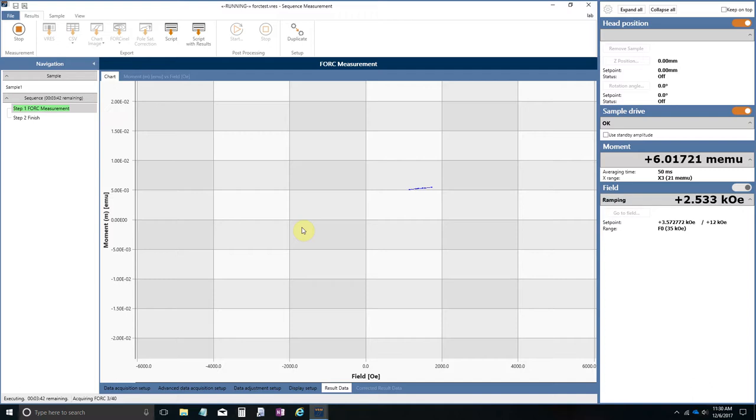So a typical series of first-order reversal curves can contain thousands if not tens of thousands of data points. And therefore, the measurement can be inherently slow. However, in the Model 8600, we've designed it to be very fast. And consequently, we can collect a series of FORCs in a fraction of the time that it normally takes on most magnetometer systems.